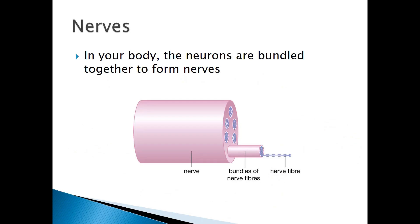Nerves within the body are made up of bundles of nerve fibers, and nerve fibers are made up of neurons.